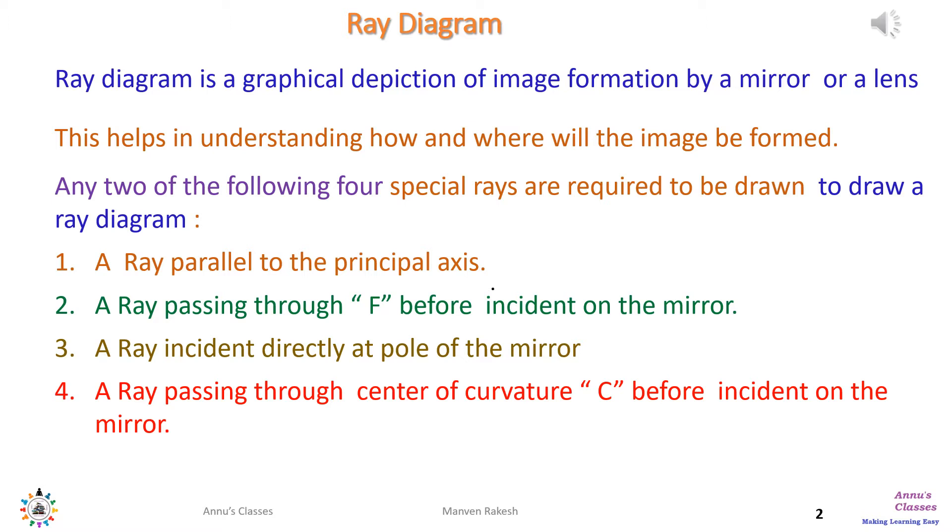To draw a ray diagram, any two of the following four special rays are required: 1. A ray parallel to the principal axis. 2. A ray passing through F before incident on the mirror. 3. A ray incident directly at the pole of the mirror. 4. A ray passing through center of curvature C before incident on the mirror.